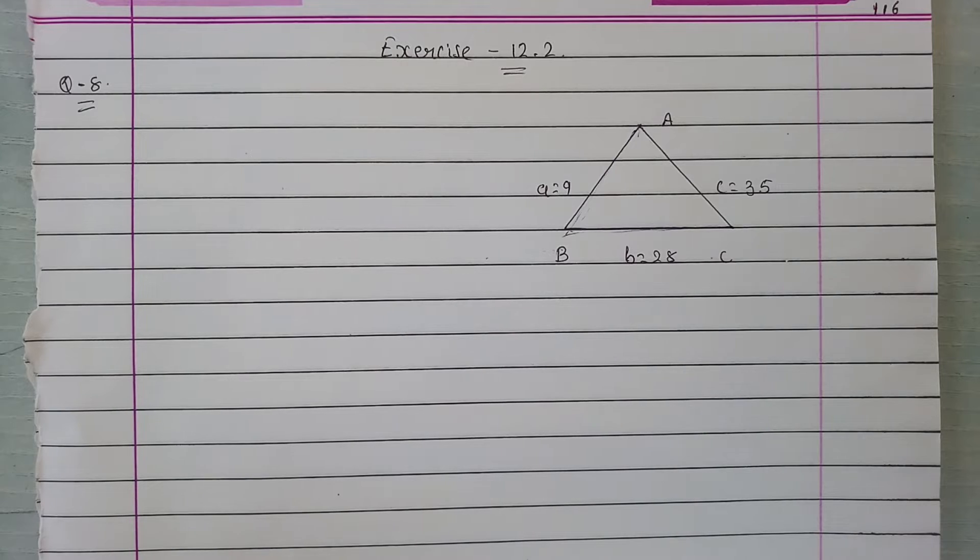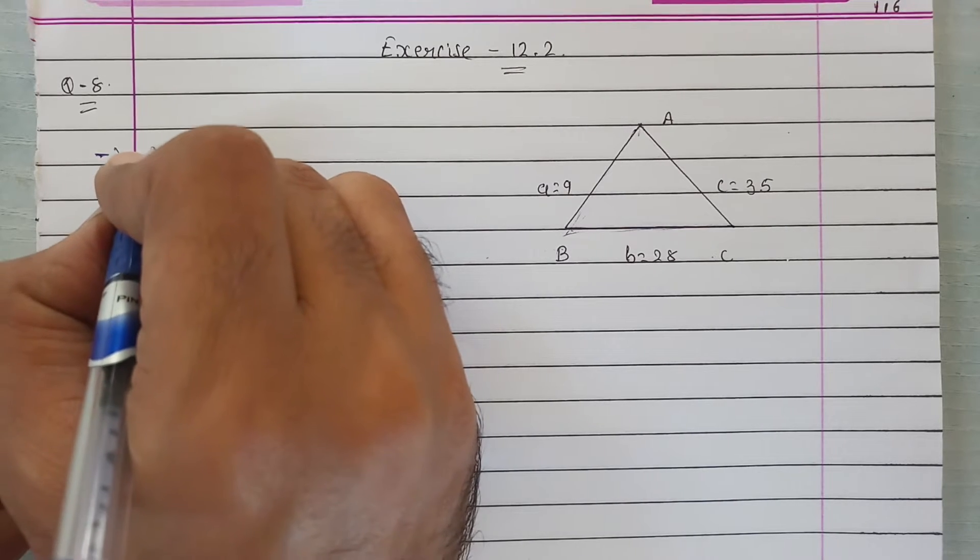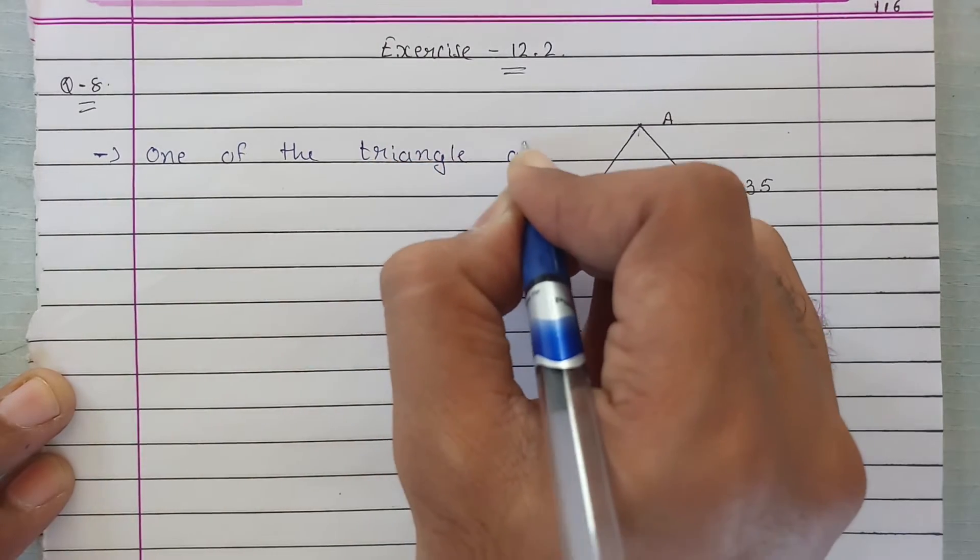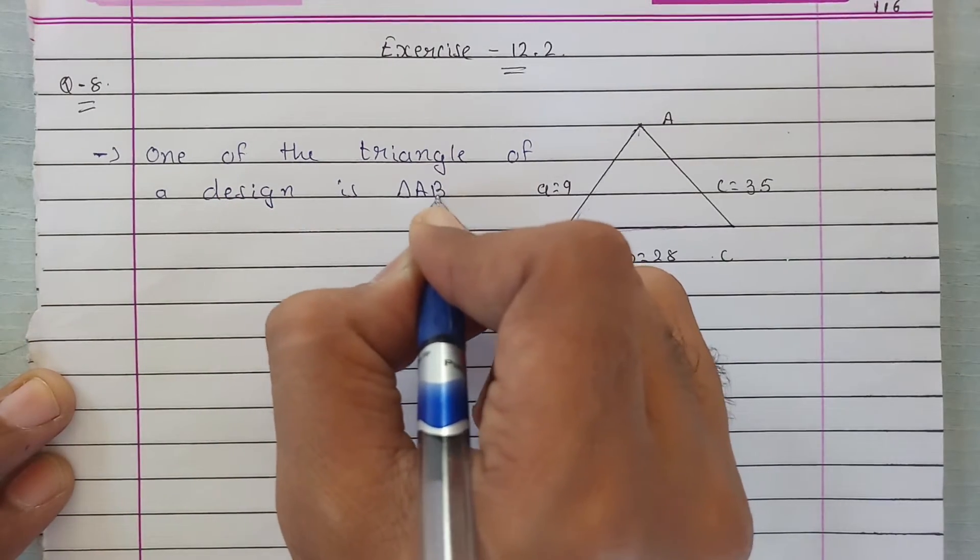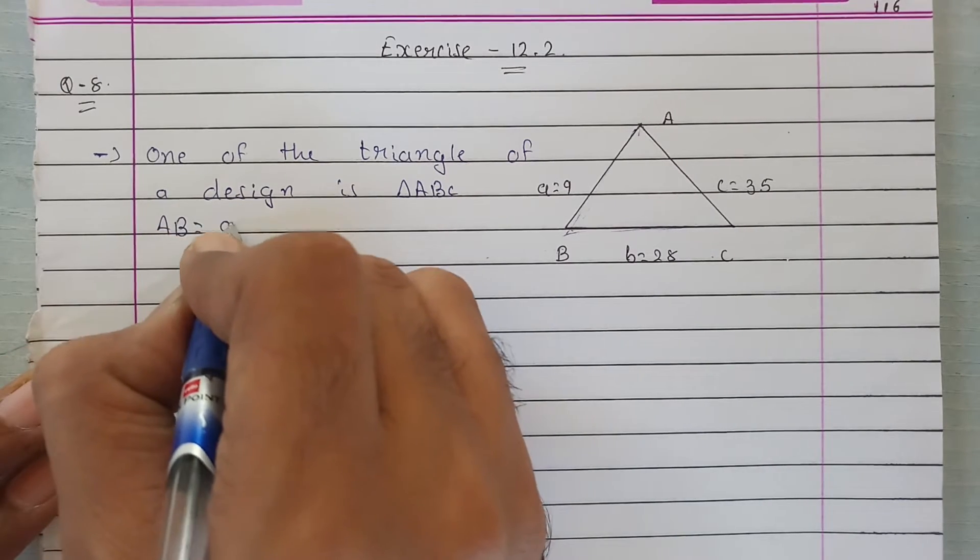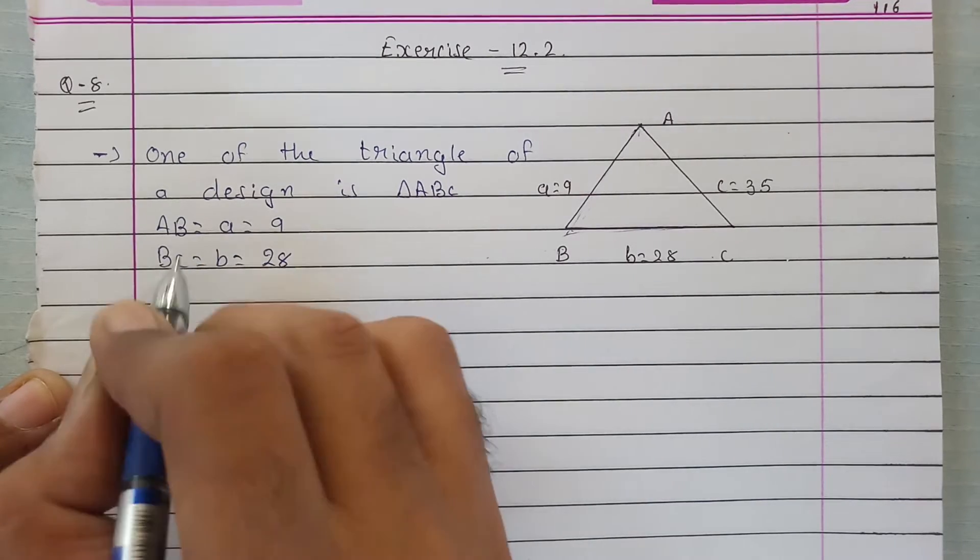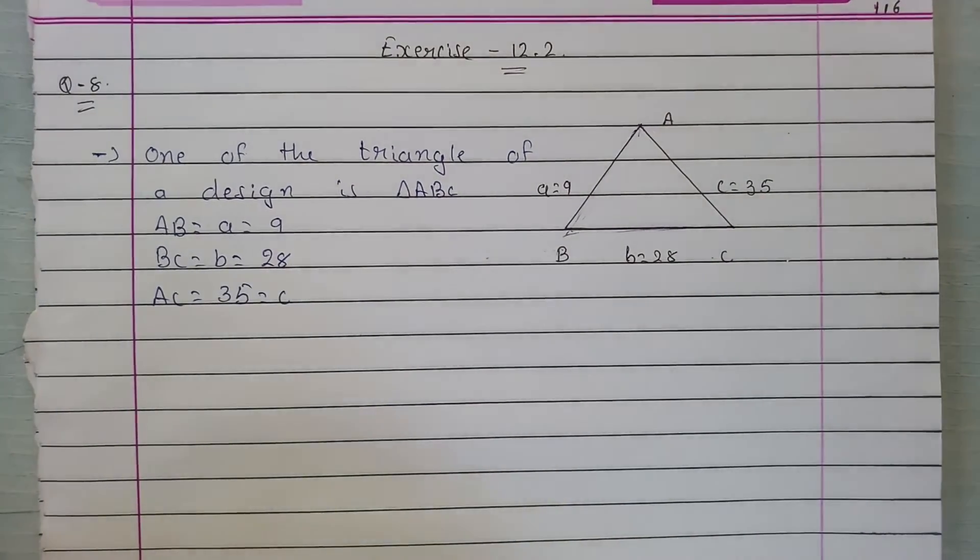First, we want to find one triangle's area. So one of the triangles of the design is triangle ABC, where AB = a = 9, BC = b = 28, and AC = c = 35. To find the area, first we have to find S.